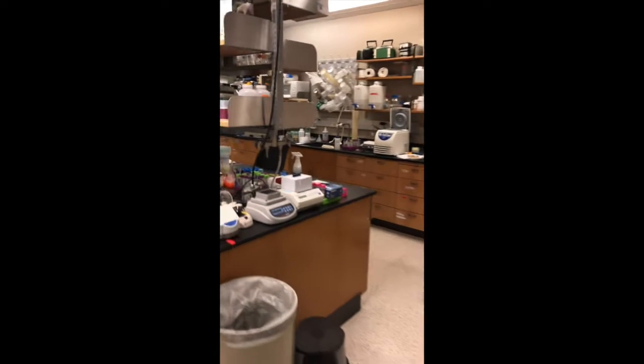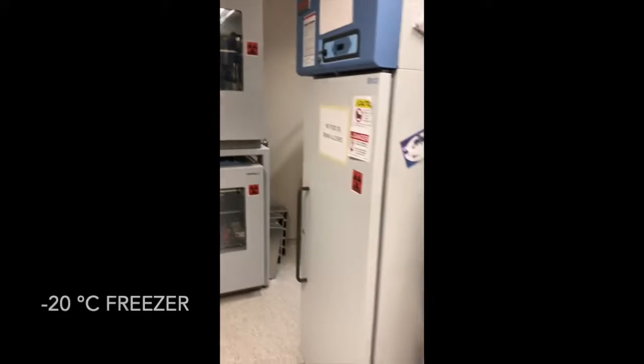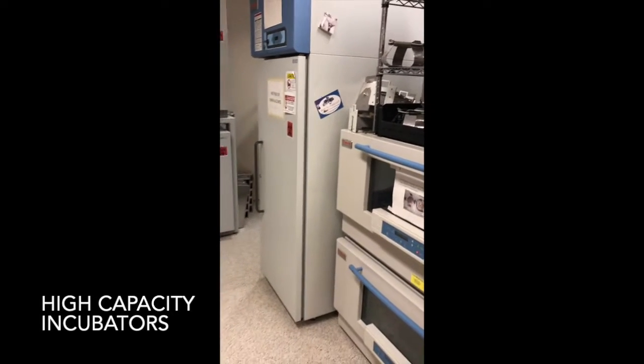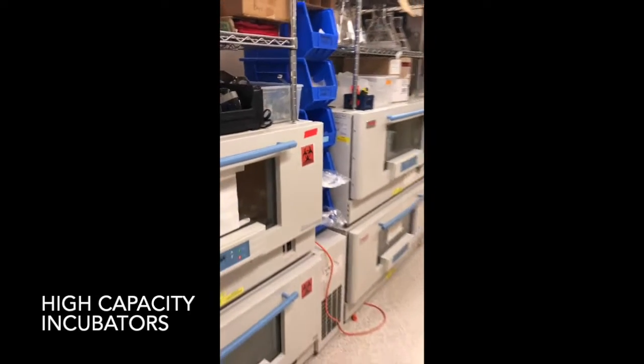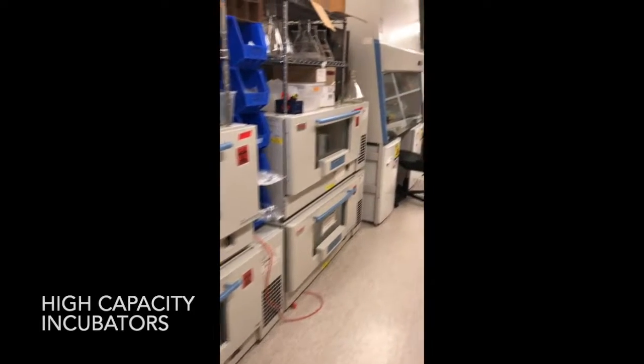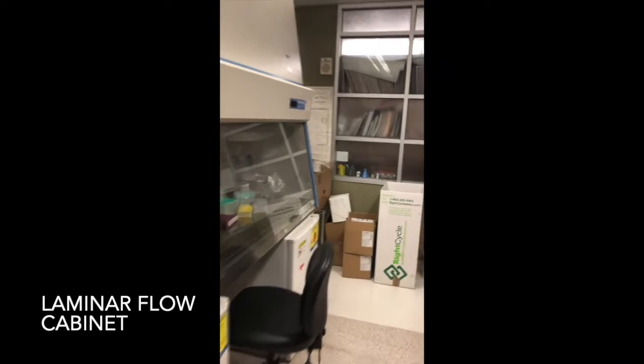As we move into one of the main labs you saw the minus 80 freezer there, here's a little bit better view with a couple vertical incubators next door, minus 20 freezer there. And then of course our large capacity incubators. So this is where we incubate plates for enzyme variants for directed evolution.